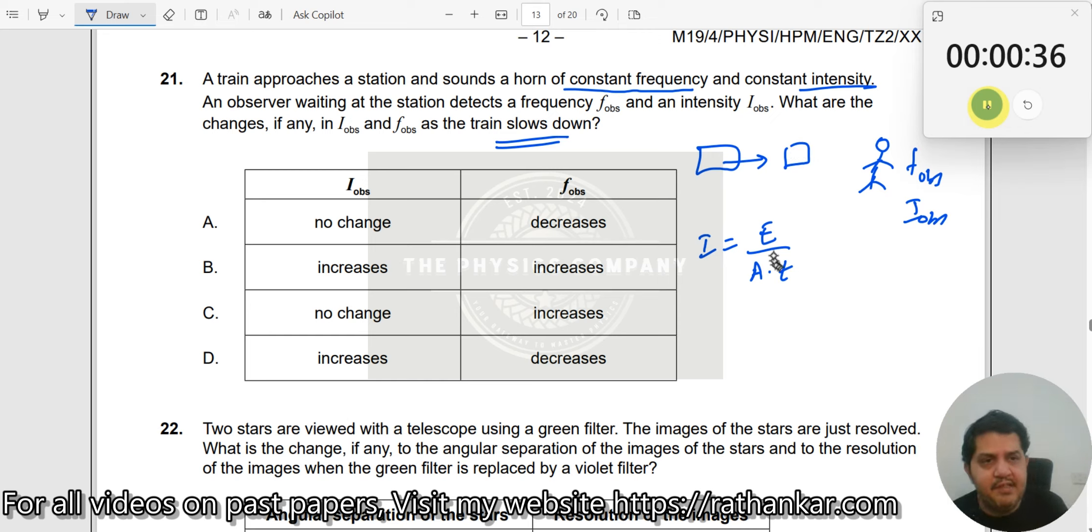Now, intensity as you know, it's energy by area into time. As he starts sounding the horn, the energy doesn't change. Energy is always a constant. So, energy no changes. Therefore, this increases and increases goes away. So, these two could be the right answers. Let us check here.